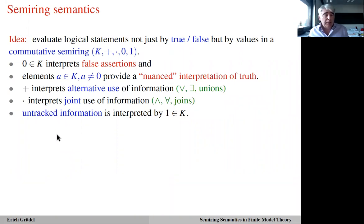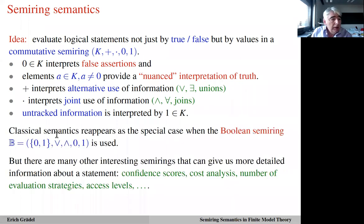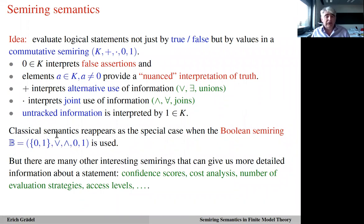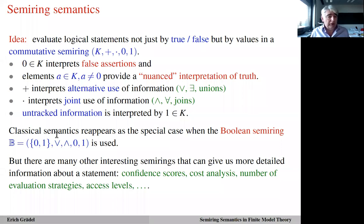The one element of the semi-ring represents untracked information — that is, information we take for granted and do not put into question. Classical semantics reappears in the special case when we use the Boolean semi-ring. But there are many other interesting semi-rings, and these give us more detailed information about the statement, such as confidence, cost analysis, counting the number of evaluation strategies, reasoning about different access levels to information, and so on.